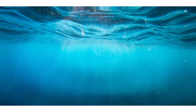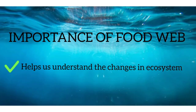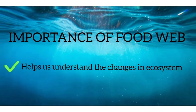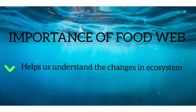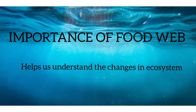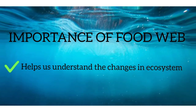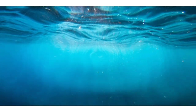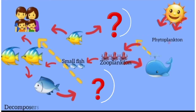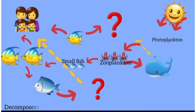The importance of food web is that it helps us understand the changes in an ecosystem. For example, if one or two species are being eliminated from the food web, it will affect the whole ecosystem.